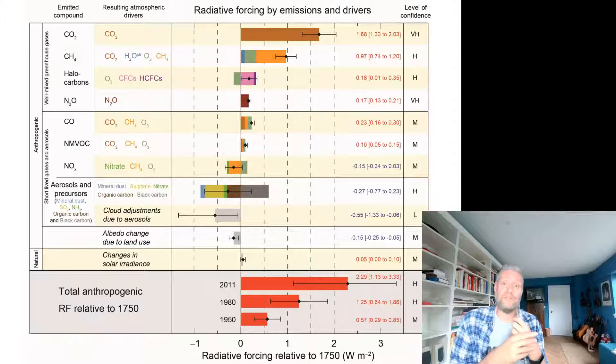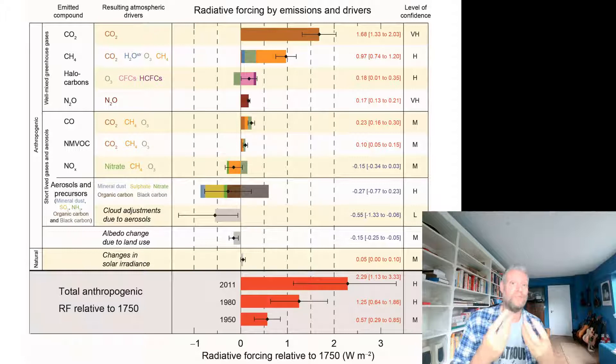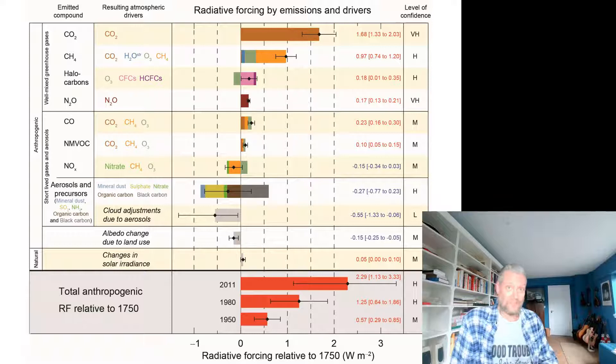The reason that these dust particles cause cooling is twofold. First, these particles in the atmosphere actually reflect the sunlight back into outer space, so the heat simply does not reach the surface of the planet. But these dust particles also act as cloud condensation nuclei — water vapour condenses around these dust particles, and that leads to the formation of clouds.